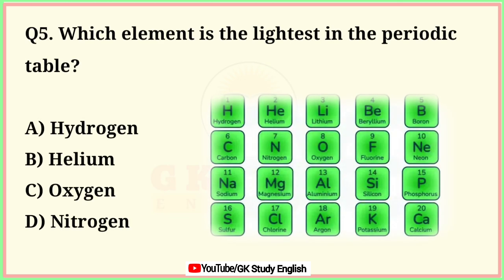Question number 5. Which element is the lightest in the periodic table? A. Hydrogen. B. Helium. C. Oxygen. D. Nitrogen. Correct answer is option A. Hydrogen.